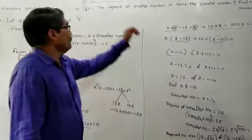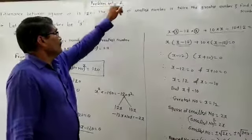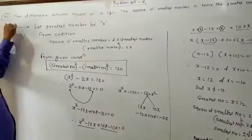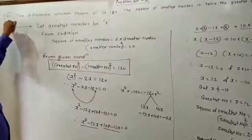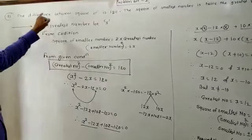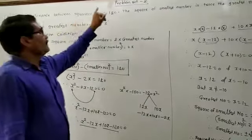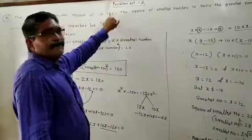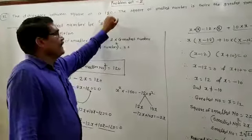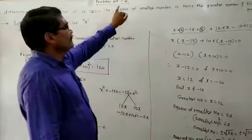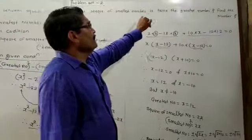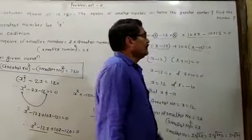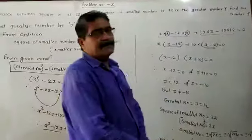We have to start with problem set 2, sub question 12. The difference between the square of two numbers is 120. The square of the smallest number is twice the greatest number. Find the numbers.